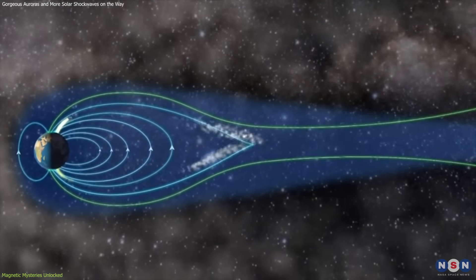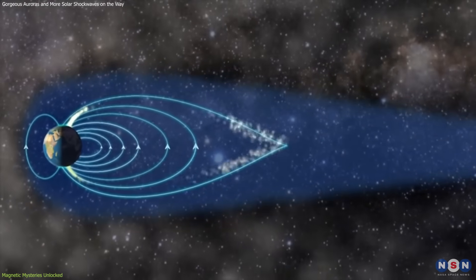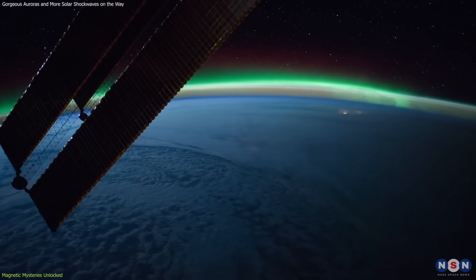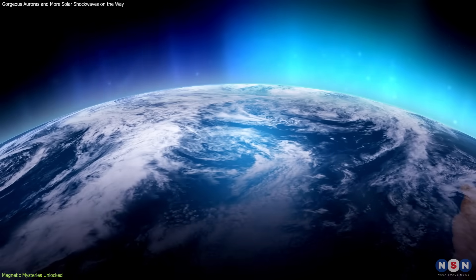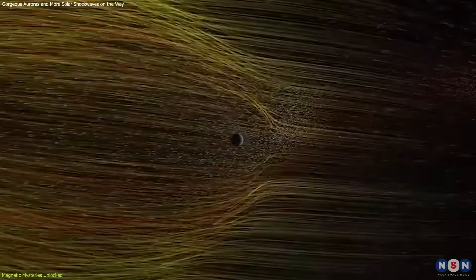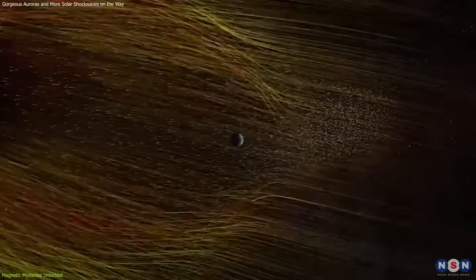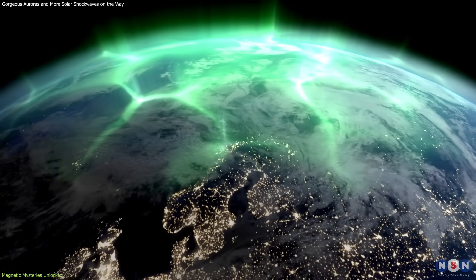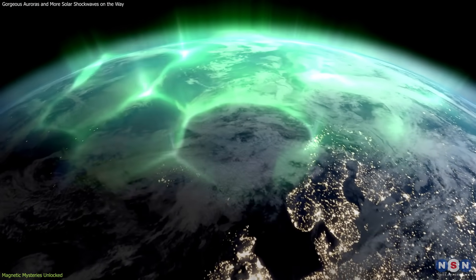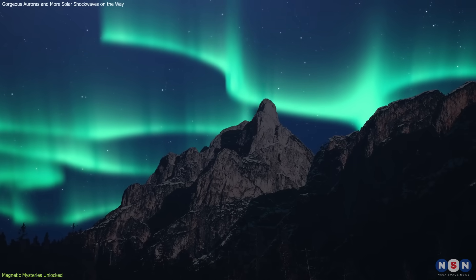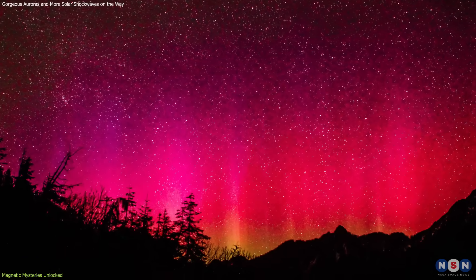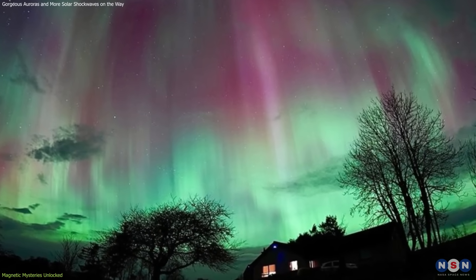Recent research suggests that the current weakening of the magnetic field could be why auroras are becoming more visible and vibrant across different parts of the world, far from the usual polar regions. This weakening allows more solar particles to penetrate our atmosphere, interacting with gases to produce auroras over a larger geographical area. This phenomenon could explain the recent sightings of the aurora in places as far south as Florida or as northward as the United Kingdom.